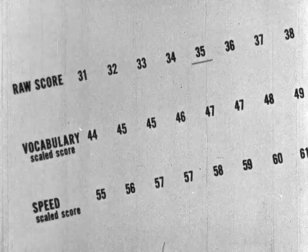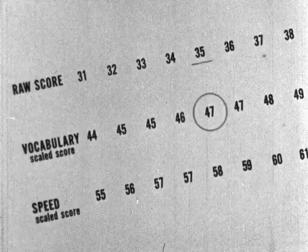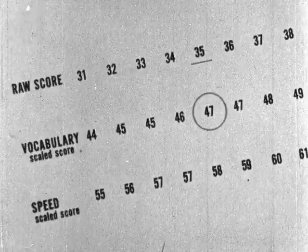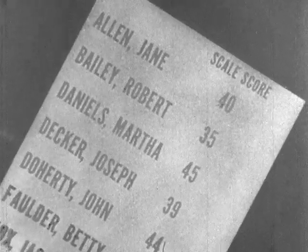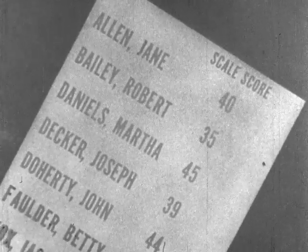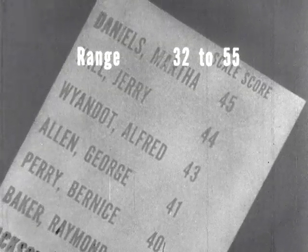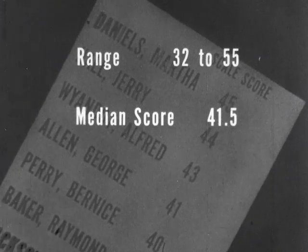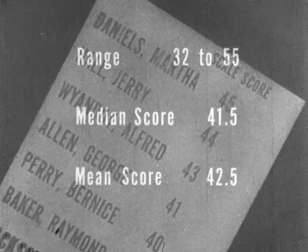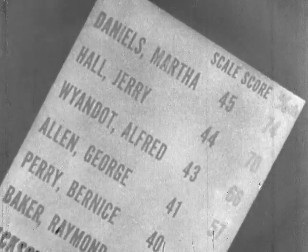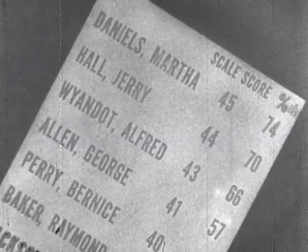Scaled scores are an aid to interpretation of test results. They put this class and the national norm group on a common scale and make it possible to perform various arithmetic computations which are necessary in interpretation. Using scaled scores, Miss Wilcox ranks her class in order, first for vocabulary. She determines the range of scores from highest to lowest. She identifies the median score — the number of students who scored above this point is equal to the number who scored below it. She also determines the mean score, the arithmetic average of all scores. Converting scale scores to percentile ranks following directions given in the manual makes it possible for Miss Wilcox to compare her class with the norm group.